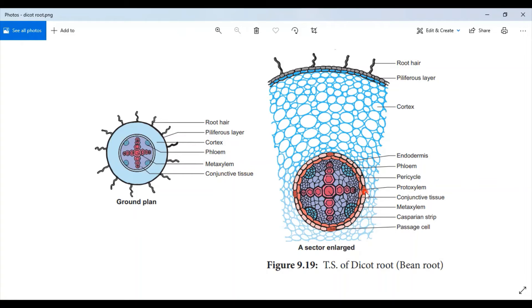Next layer is pericycle. Pericycle is generally a single layer of parenchyma cells. Lateral roots originate from the pericycle.